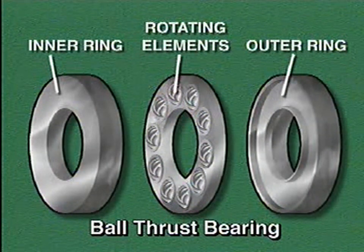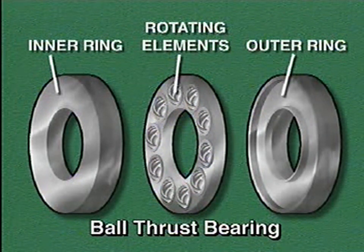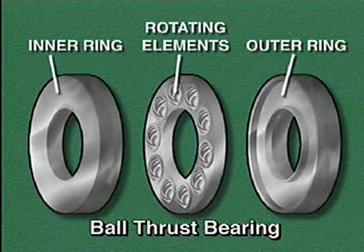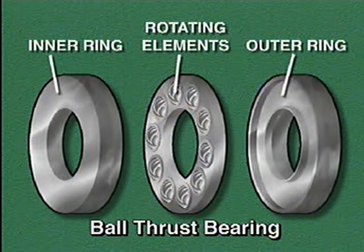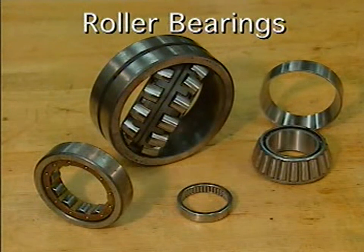This illustration shows the main parts of a type of ball bearing called a ball thrust bearing. In a ball thrust bearing, the inner and outer rings are parallel to each other instead of one inside the other. This placement of the rings allows the bearing to support axial load, but only a small amount of radial load.